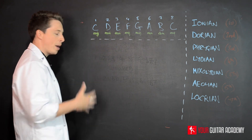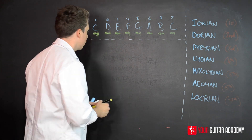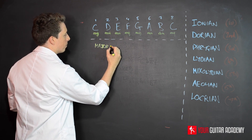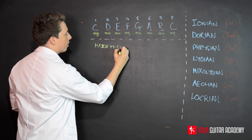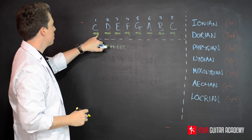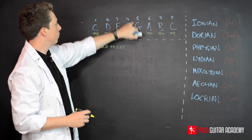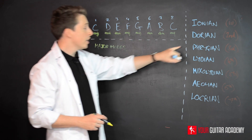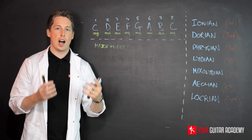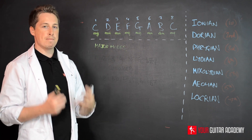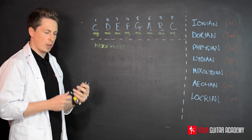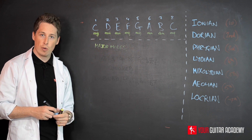Today we're going to talk about major modes. The three modes that are major — based on major chords — are the root, the fourth degree, and the fifth degree: the Ionian, the Lydian, and the Mixolydian. These three are very much based on major sounds. There's no better way to work this out than to look at the scale formulas.